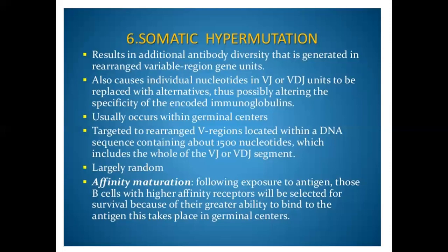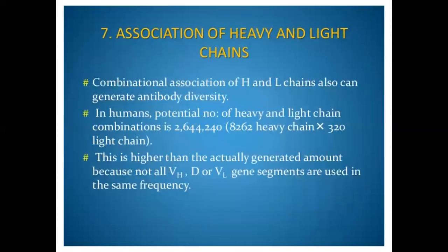Affinity maturation: following exposure to antigen, B cells with higher affinity receptors will be selected for survival because of their greater ability to bind the antigen. This takes place in the germinal center. Somatic hypermutation and affinity maturation both occur in B cell maturation.